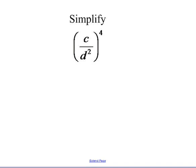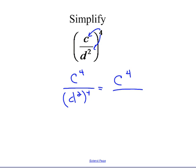For (c over d squared) to the fourth power, we bring that power in. This becomes c to the fourth over d squared to the fourth, which is c to the fourth over d to the eighth — because power to a power means multiply your powers, giving 2 times 4 equals 8. You'd get the same result multiplying c over d squared by itself four times: four c's on top give c to the fourth, and four d squareds add up to d to the eighth.